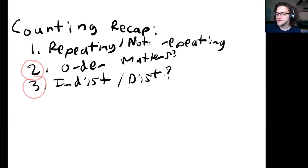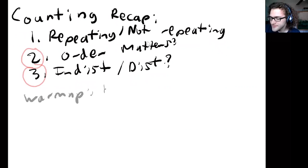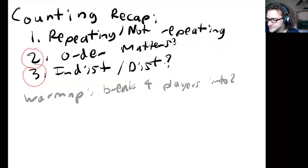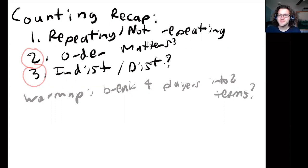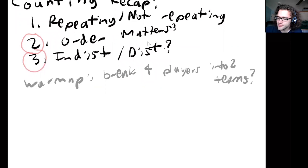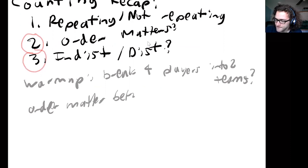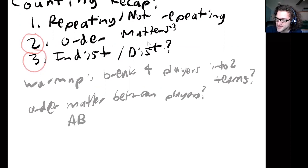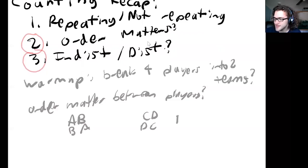As a warm-up, let's consider breaking up four players into two teams. How many ways can we do that? Initially we think: does the order matter between players? If I have players A and B on one team and C and D on another, does that look different than B and A with D and C? Well, they're on the same team, so no — the order doesn't matter here.